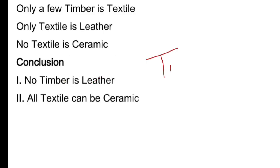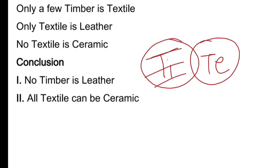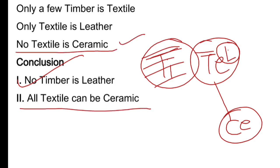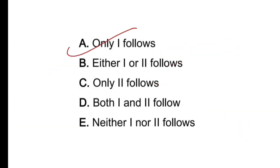Agle question mein: 'only a few timber is textile' — diagram bana diya. 'Only textile is leather' — only ka diagram: leather ko textile ke andar draw karte hain. 'No textile is ceramic.' Conclusion check karte hain: 'no timber is leather' — timber aur leather ke beech mein koi bhi relation nahi dikh raha, toh first sahi. 'All textile can be ceramic' — lekin 'no textile is ceramic' statement hai, toh ye kaise ho sakta? Isliye second wrong. Answer: only first follows.